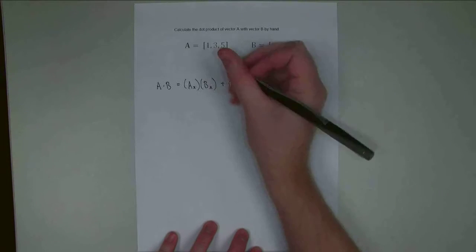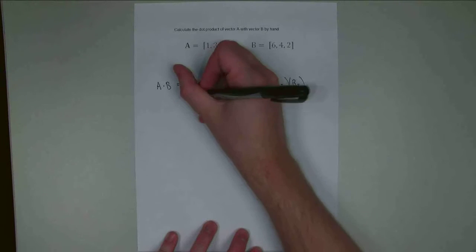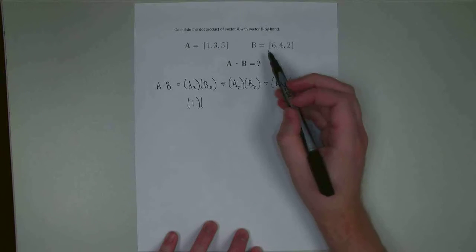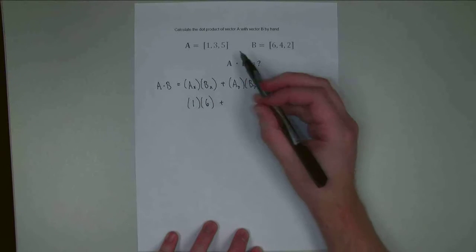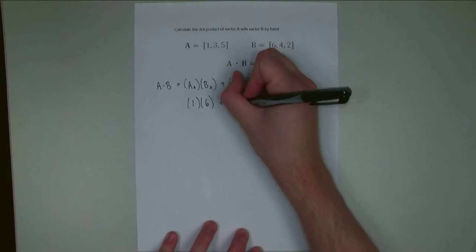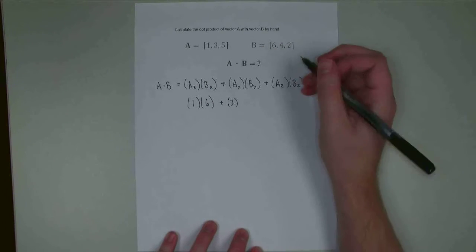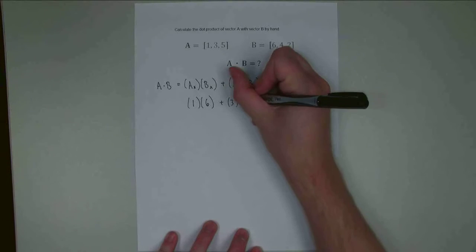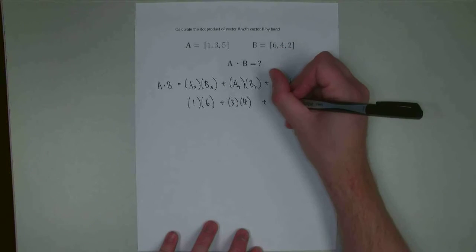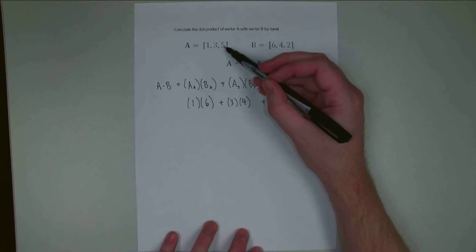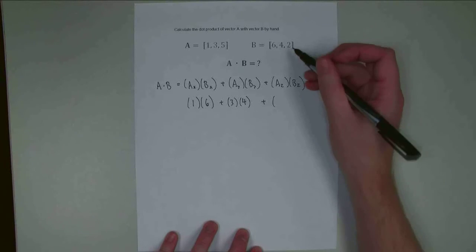So the X component of A is going to be 1, X component of B is going to be 6. Y component of A is going to be 3, Y component of B is going to be 4. And the Z component of A is 5, Z component of B is 2.